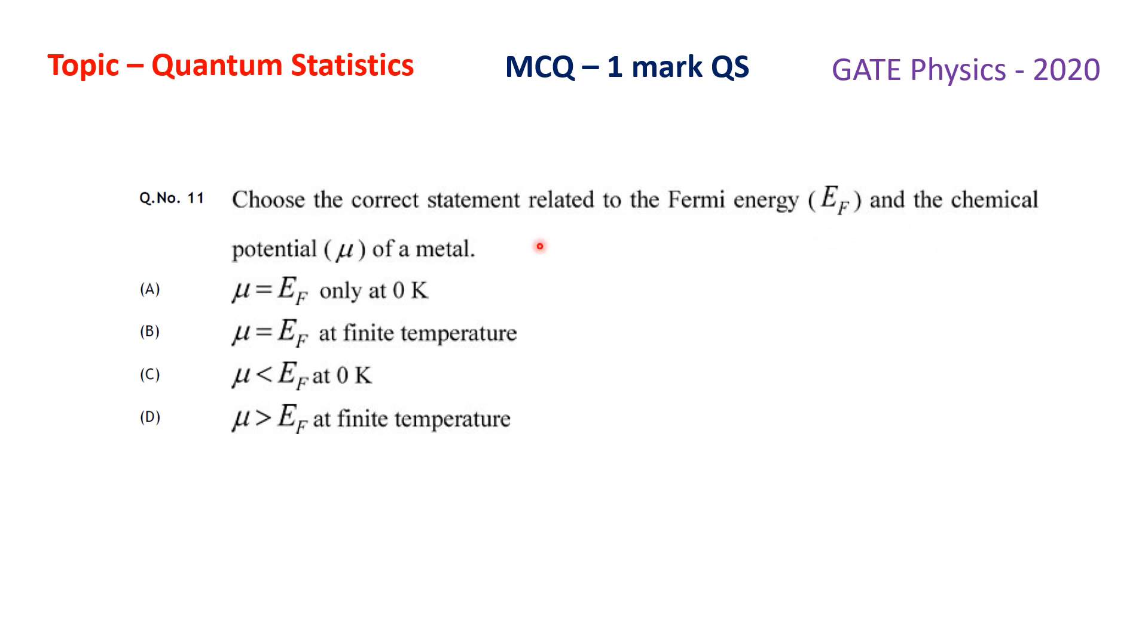and the chemical potential μ of a metal. Option A is μ equals Ef only at zero Kelvin. Option B: μ equals Ef at finite temperature. Option C: μ less than Ef at zero Kelvin.